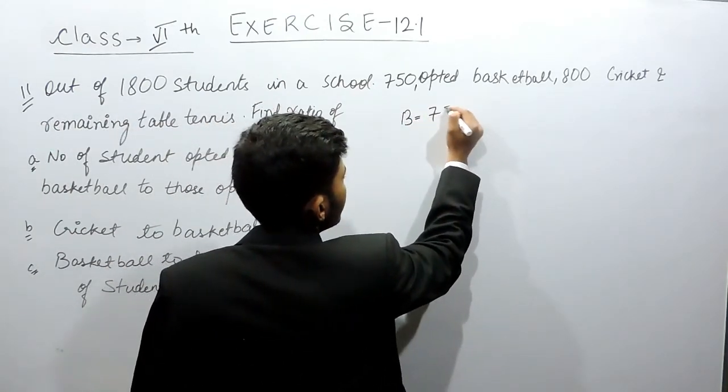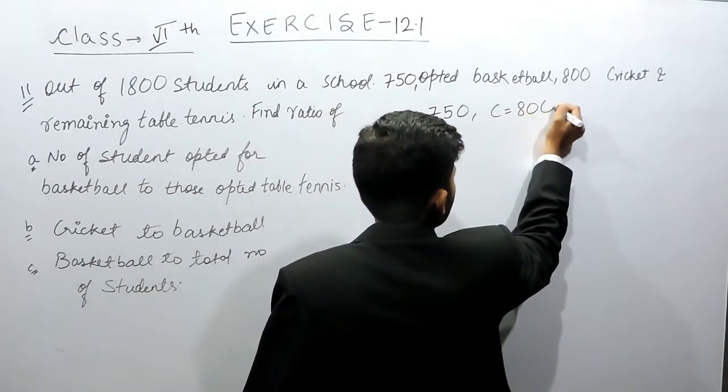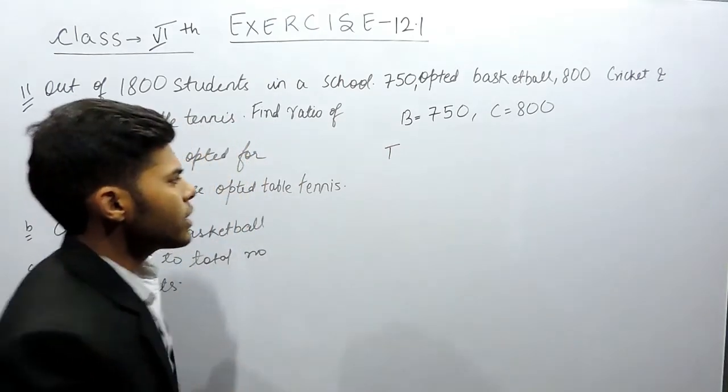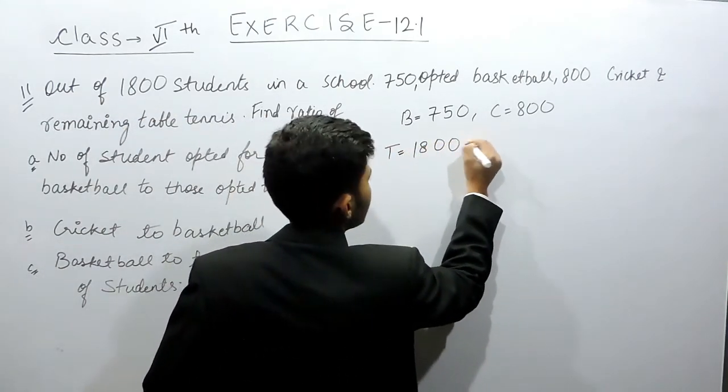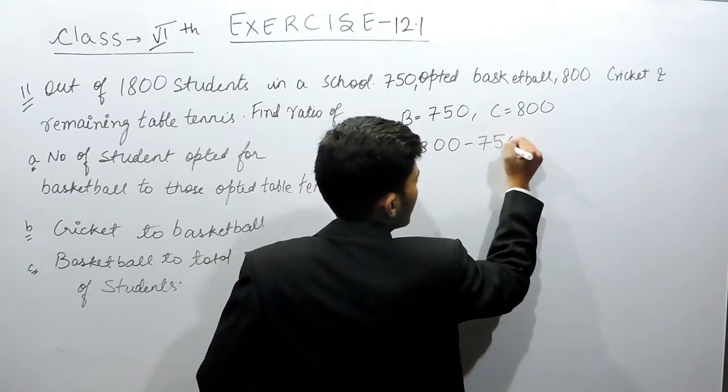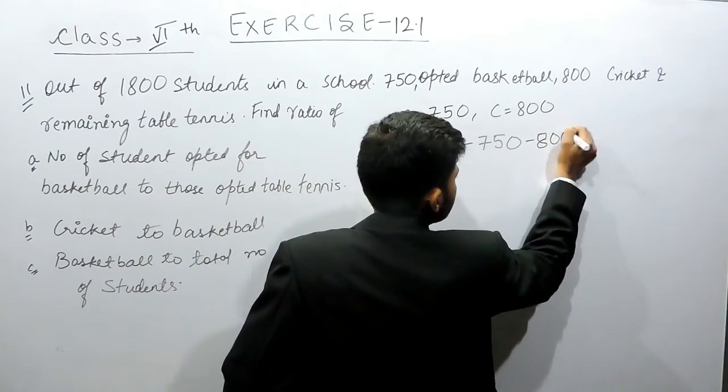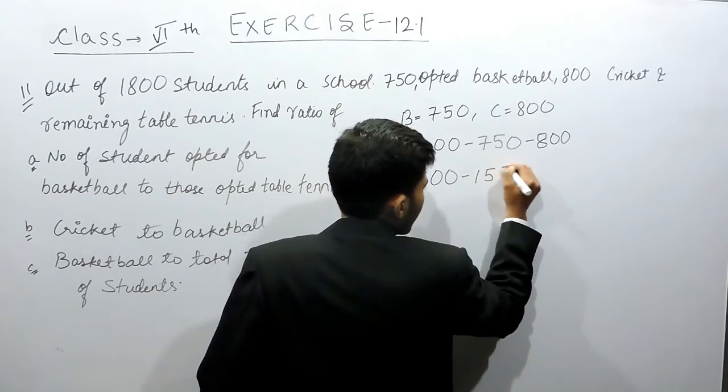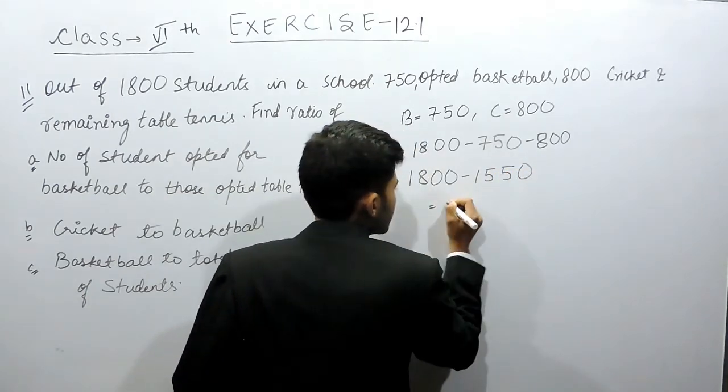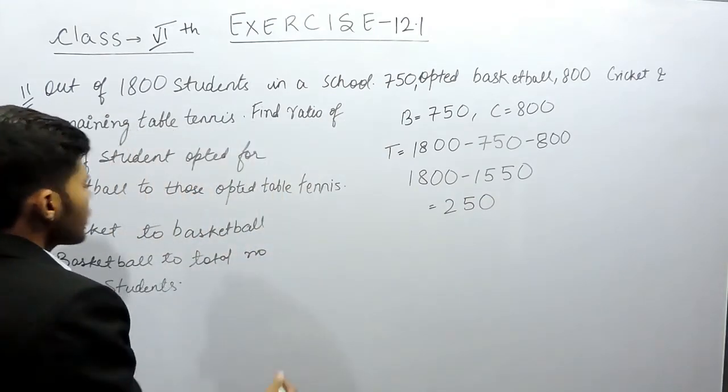First of all, students playing basketball equals 750, playing cricket equals 800. Now the students playing tennis will be equals to total, that is 1800, minus who play basketball, minus who play cricket. So this will be equals to 1800 minus 1550, which equals 250.